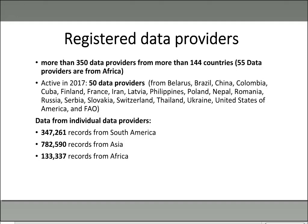In 2017, active data providers were from countries including Belarus, Brazil, China, Colombia, Cuba, Finland, France, Iran, Latvia, Philippines, Poland, Nepal, Romania, Russia, Serbia, Slovakia, Switzerland, Thailand, Ukraine, the United States of America, and the Food and Agriculture Organization itself. From that list, we can see that no African country is represented, which means as Africans we need to do more for our research to also be visible via that portal.